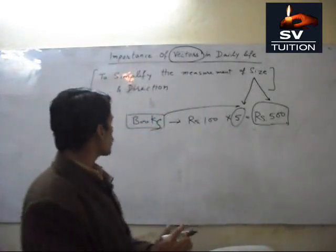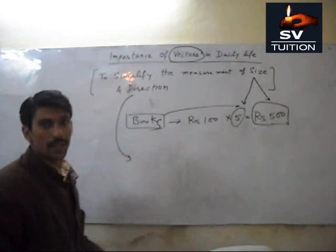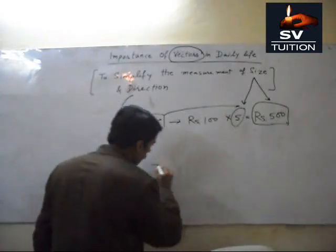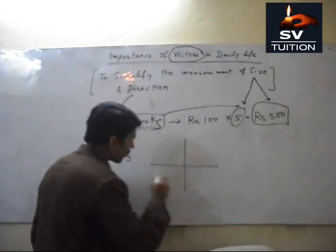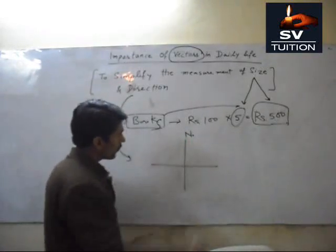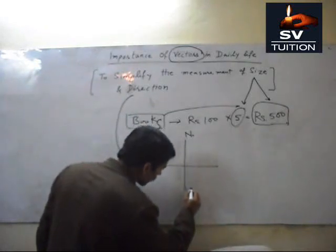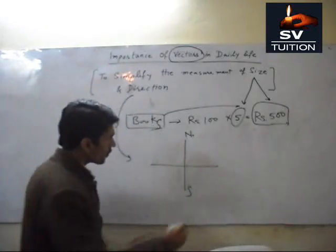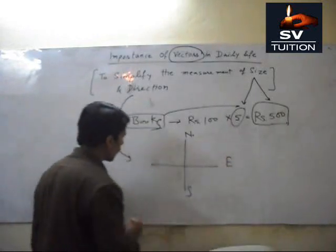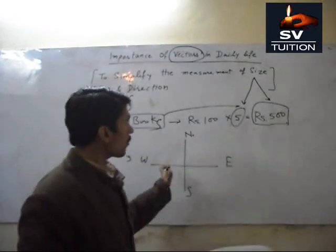Now, direction. Directions are 4. This is North, this is South, this is East, and this is West. Now, these are the four directions.